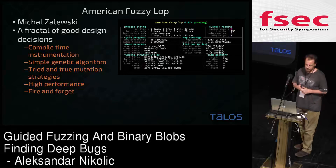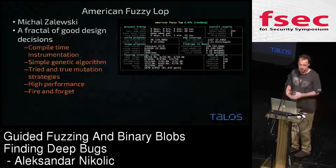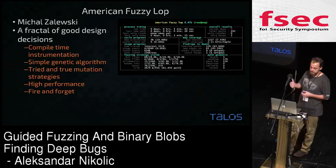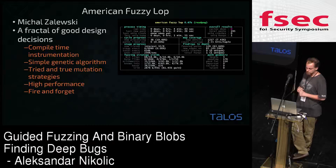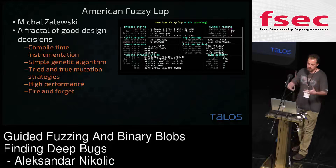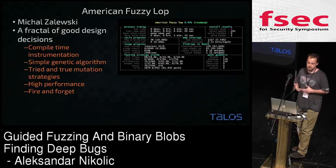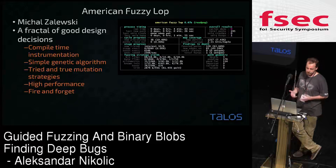Moving on to the actual state of the art in fuzzing, and especially guided fuzzing — currently the most popular tool is American Fuzzy Lop, which comes with a nice ncurses GUI, old-style kind of GUI you can see here in the picture. It has a bunch of information that can actually tell you how well your fuzzer is doing. And as Ben Nudge would say, it's a fractal of good design decisions — every single design decision AFL has taken is good. It did everything right.